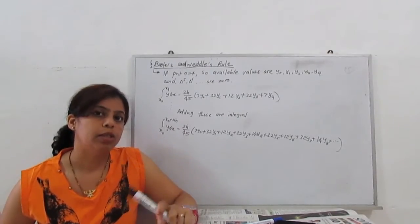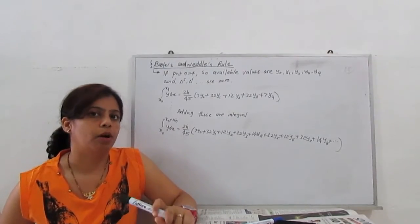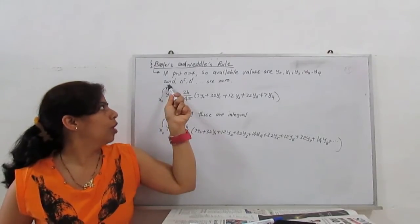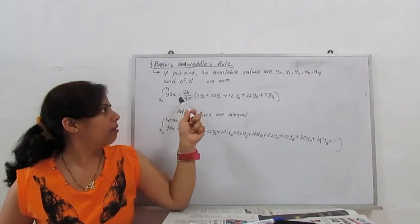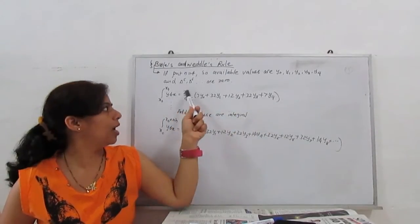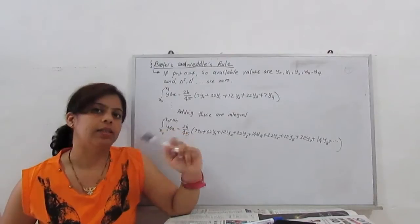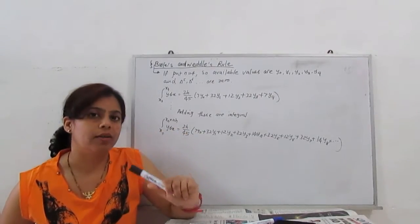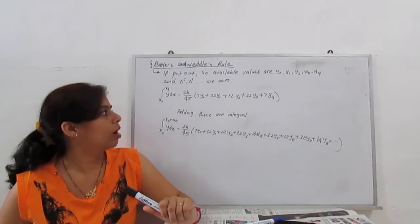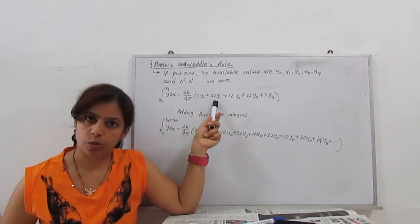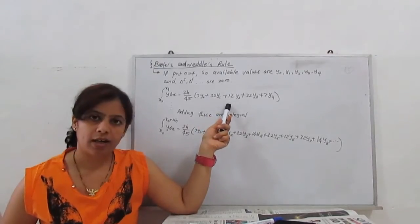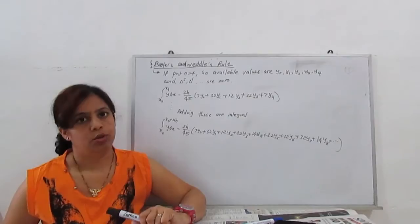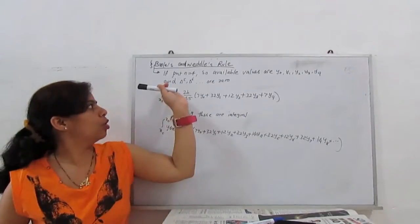...the Newton forward interpolation formula. From that, if we put x0 to x4, y dx, our term is given by 2h by 45. H is the interval. What interval? That is fixed only for equal interval; this formula works. So 7y0 plus 32y1 plus 12y2 plus 32y3 plus 7y4. This is for x0 to x4.